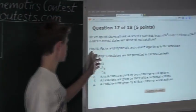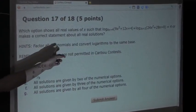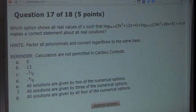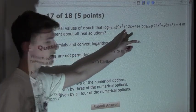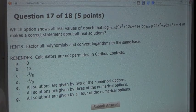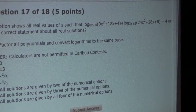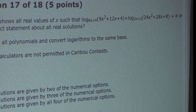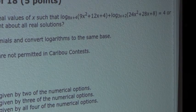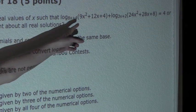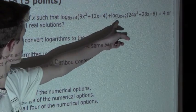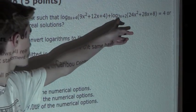Now let's look at the question. From the hints it says factor all polynomials and convert the logarithms to the same base. For the polynomial 9x² + 12x + 4, looking at it closely, we can see that this polynomial is just the square of 3x + 2, which is the base for this logarithm.